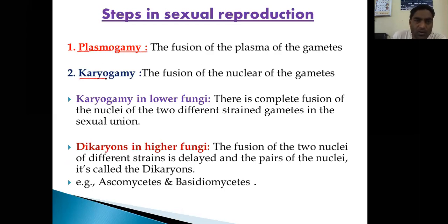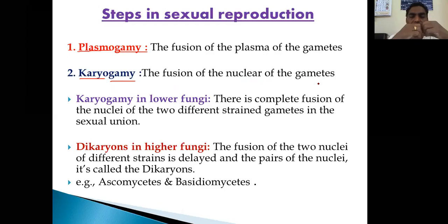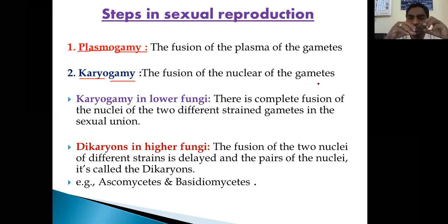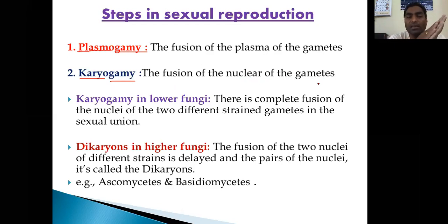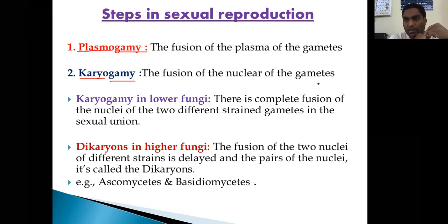The second step is karyogamy. Karyo means nucleus, gamy means fusion — so karyogamy is the fusion of the nuclei of the gametes. After plasmogamy, the wall disintegrates and both the male nucleus and female nucleus come closer. They fuse together in the process called karyogamy. In lower fungi, there is a complete fusion of nuclei of two different strain gametes in the sexual union.